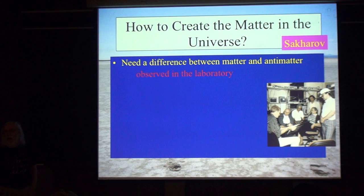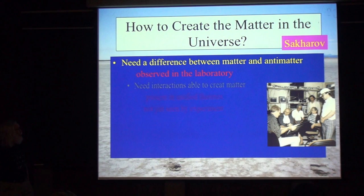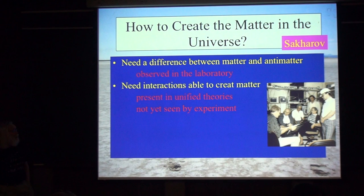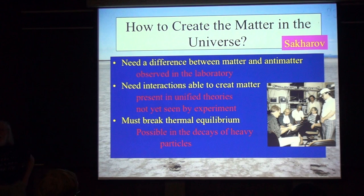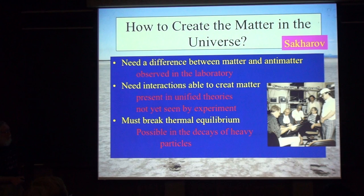This connection was suggested by Russian physicist Sakharov in 1967. He said: you've got these differences between matter and antimatter observed in the laboratory; in unified theories there are interactions that create matter; and in the universe you have a breakdown of thermal equilibrium. Those three conditions would enable you potentially to create a matter-antimatter asymmetry. This is a picture of Sakharov in about 1990 when he came to visit CERN.